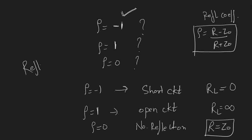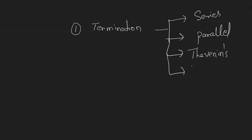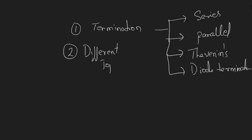Now we know what is reflection and how it occurs. We will now focus on the techniques to reduce reflections. There are multiple techniques: number one is by adding termination — terminations are of multiple types: series termination, parallel termination, Thevenin's termination, and diode termination. The second approach is using different topologies. We are going to see both of these things in the tool.